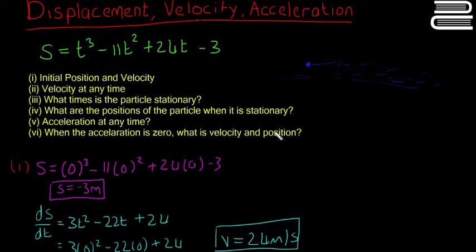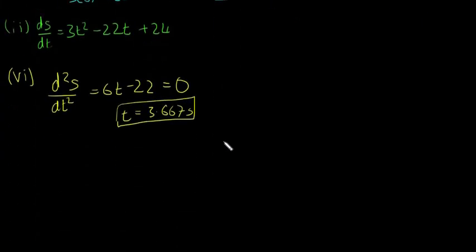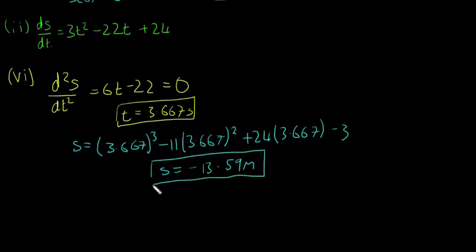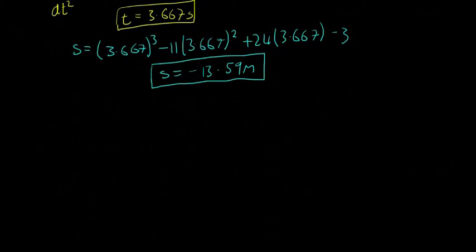And we're looking for the velocity and the position. So I'll actually do the position first. So s is going to be equal to 3.667 cubed minus 11 times 3.667 squared plus 24 times 3.667 minus 3. And that will give us that s equals minus 13.59 meters. This just tells us that when its acceleration is zero, when it's not getting any faster or slower, that the displacement is that.